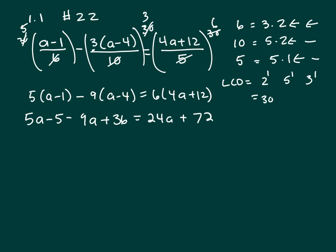Let's combine like terms on both sides. 5a minus 9a is negative 4a. Negative 5 plus 36 is positive 31. And there's nothing to combine on the right.